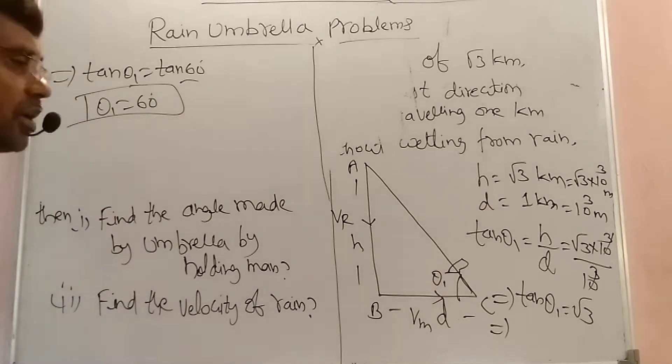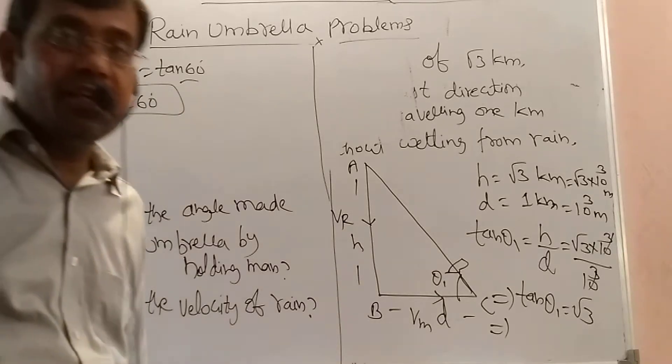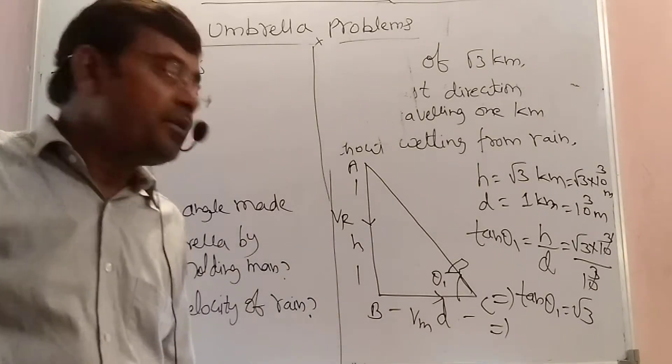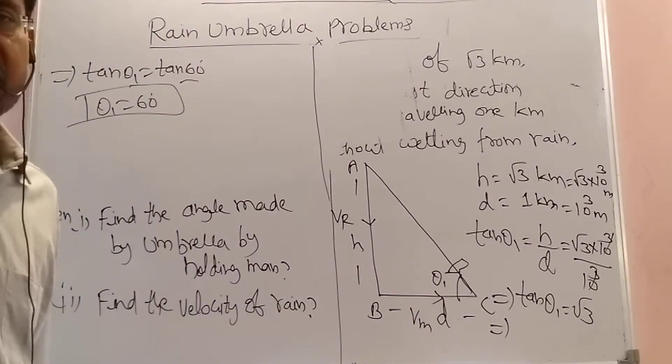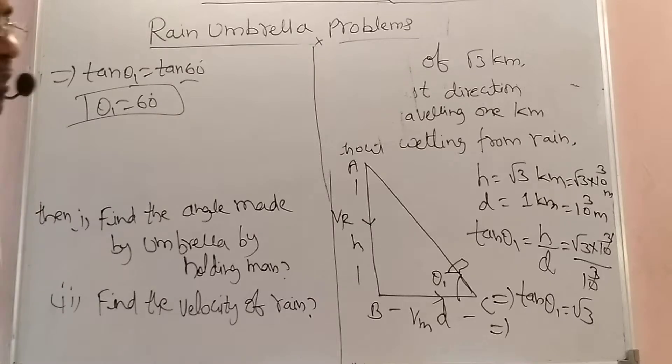So the man must hold the umbrella making a 60 degrees angle to avoid getting wet. That part is now completed.